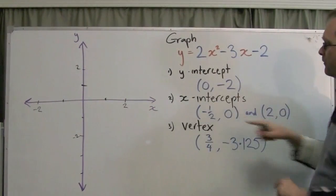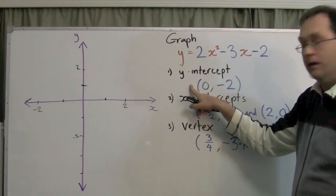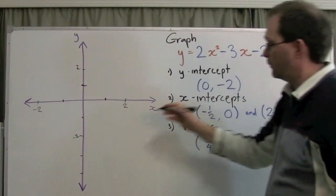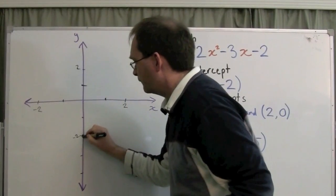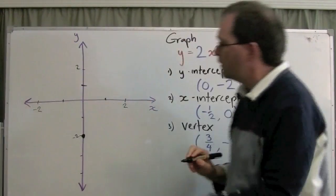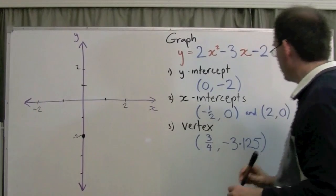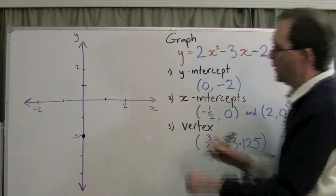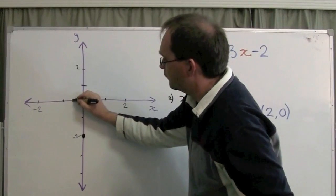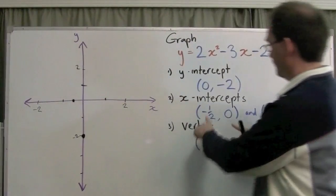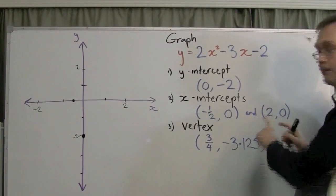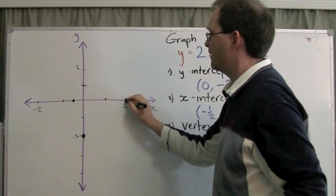To plot these points, the y-intercept is at 0 minus 2. That's just here. So, the curve of the parabola is going to go through that point. The other points we've got, minus a half, 0, and 2, 0. That's there and there.